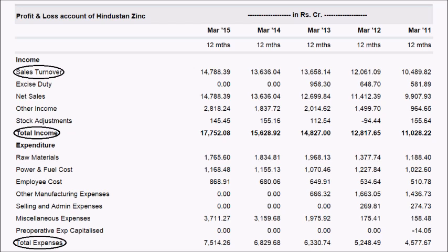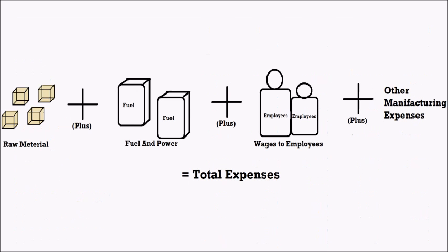Then there are sales expenses. Since Hindustan Zinc is a mining company, it may not have huge sales expenses, but for consumer durable and non-durable companies the sales expenses are generally high. There will also be miscellaneous expenses, and then total expenses are obtained by adding up all the expenses incurred during manufacturing and sale of goods and services.